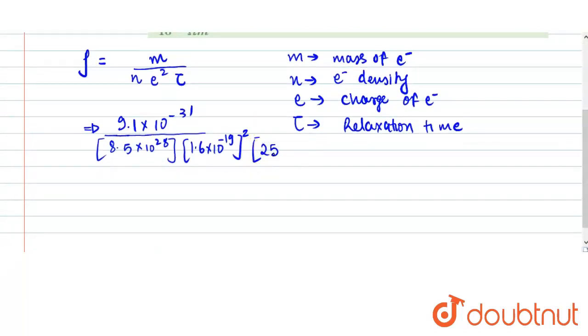So 1 femtosecond is 10⁻¹⁵ seconds. So this is 25 femtoseconds. On solving this, we get nearly 1.67 × 10⁻⁸ ohm meter.